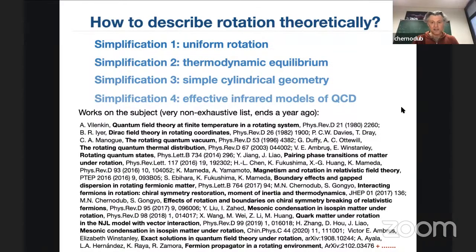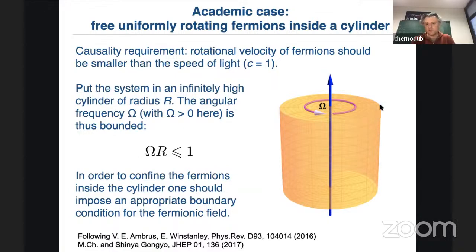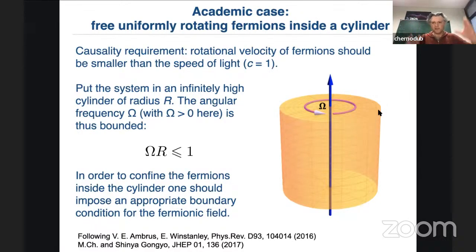First, we put the system in a cylinder and make it rotate with some global angular frequency — like a solid body, so every point has the same angular velocity with respect to the cylinder axis. We must respect causality: the velocity at the edge of the cylinder should not exceed the speed of light. There were works where people considered slow rotation in an unbounded system and got unphysical instabilities because photons could travel to the edge of the universe and return with an imaginary factor.